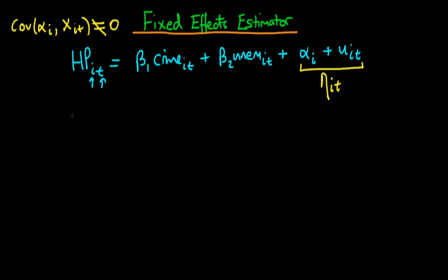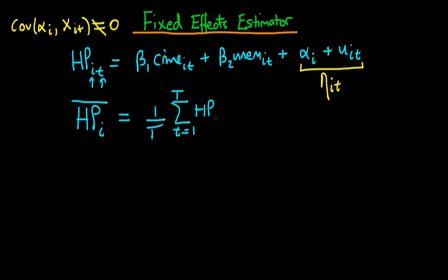If we take this original equation and calculate the average of house prices in a given city i but across time — explicitly, we take the sum of all values of house price in that city from time period t=1 to time period T, then divide through by the total number of time periods T — this gives us the time-averaged or time-meaned value of house prices in that given city.